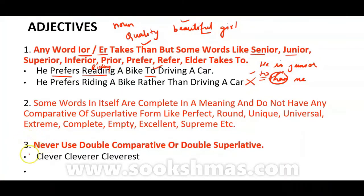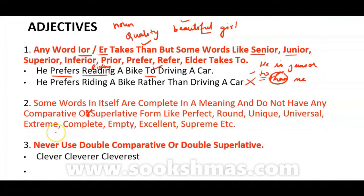Next, the second rule: Some words are complete in meaning by themselves and do not have any comparative or superlative form — like perfect, round, unique, universal, extreme, complete, empty, excellent, supreme. These words are complete in themselves.